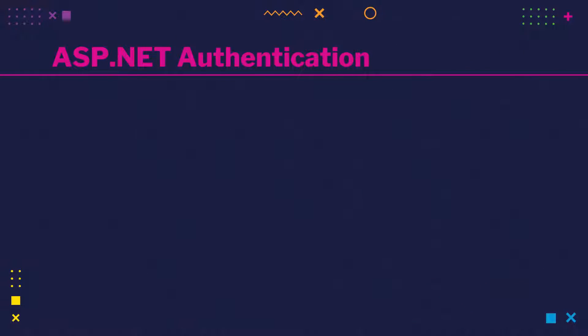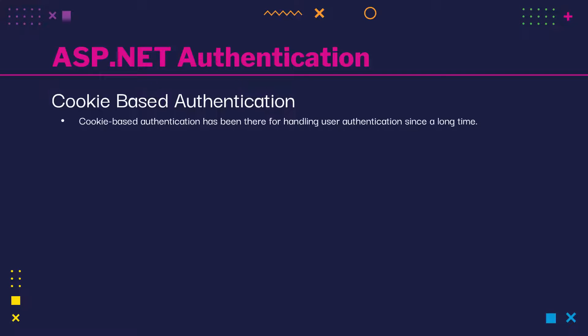Authentication can be done in two ways. Cookie based authentication has been a default method for handling user authentication for a long time. Cookie based authentication is stateful, which means that the server needs to keep track of active sessions in a database. On the front end, a cookie is created that holds a session identifier — and hence the name cookie based authentication.